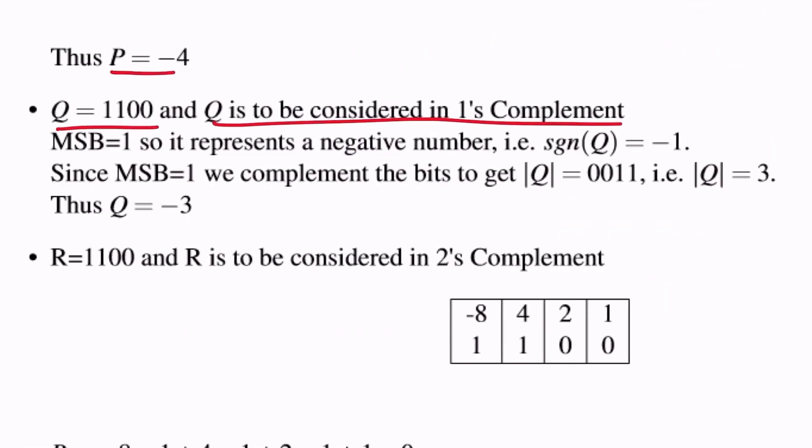As you can see here, since MSB is equal to 1, we get that signum of Q is minus 1, and we also have to complement the bits, which is what we do over here. 1100 complemented is 0011.